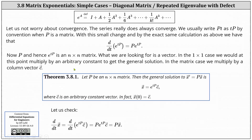Let us not worry about convergence — the series really does always converge. We usually write p times t as t times p by convention when p is a matrix. With this small change and by the exact same calculation as above, we have that the derivative of e to the power of tp equals p times e to the power of tp.